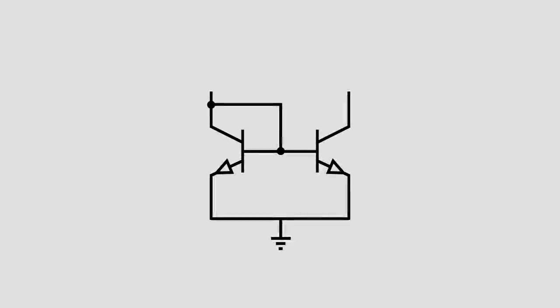When we put two identical BJTs in the following configuration, by connecting the bases together, we create a simple current mirror. When a DC current is applied to the left transistor's collector, it becomes the reference current. Watch what happens to the current on the right transistor.